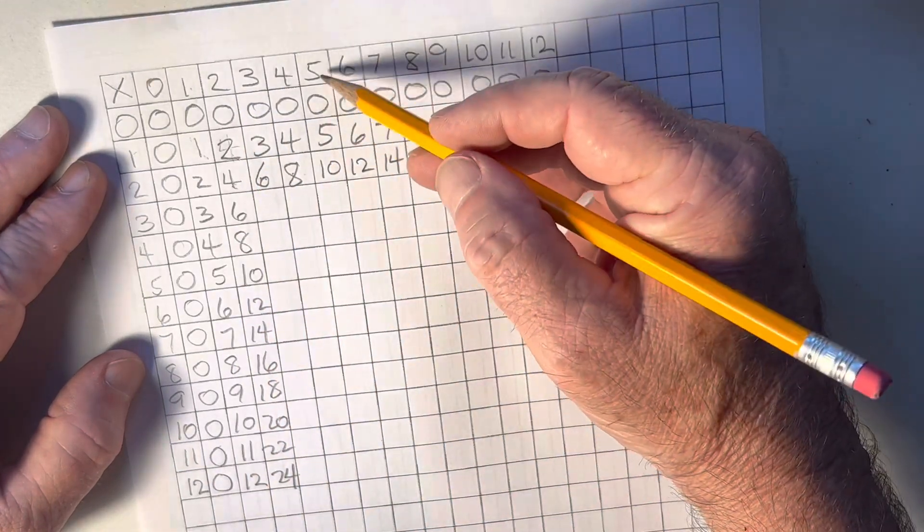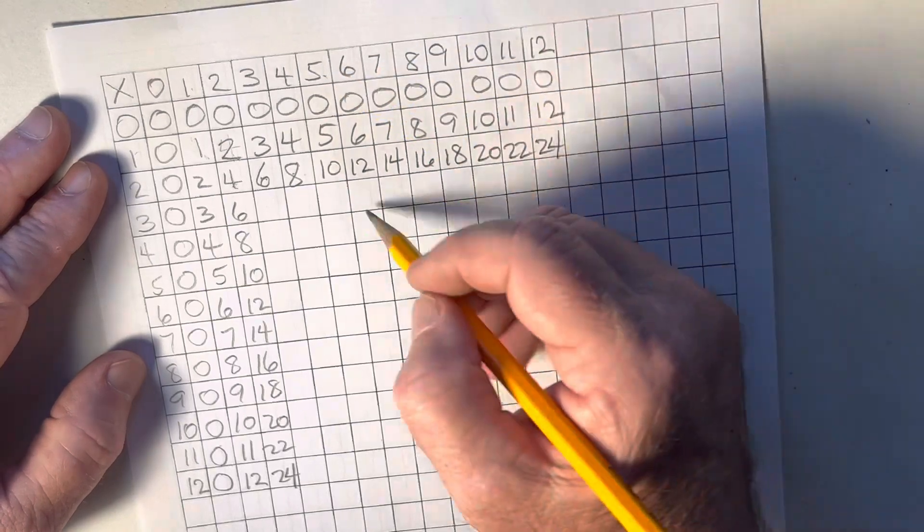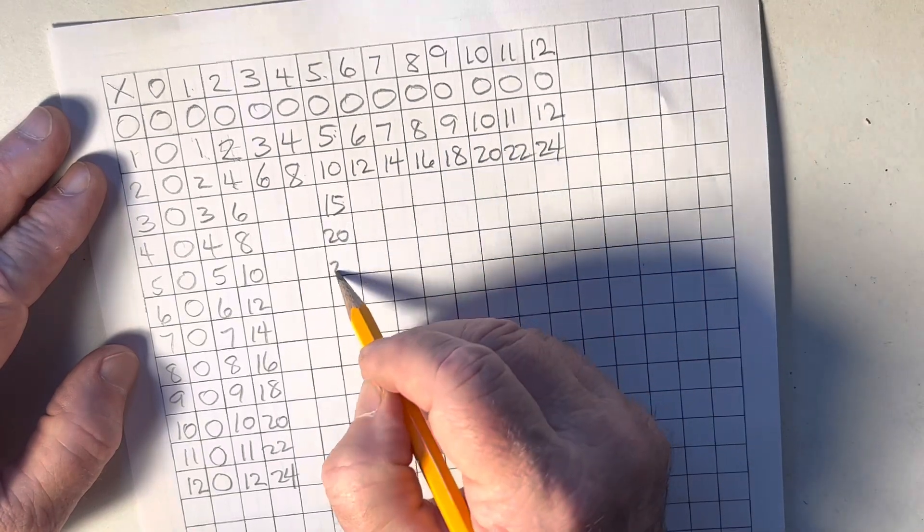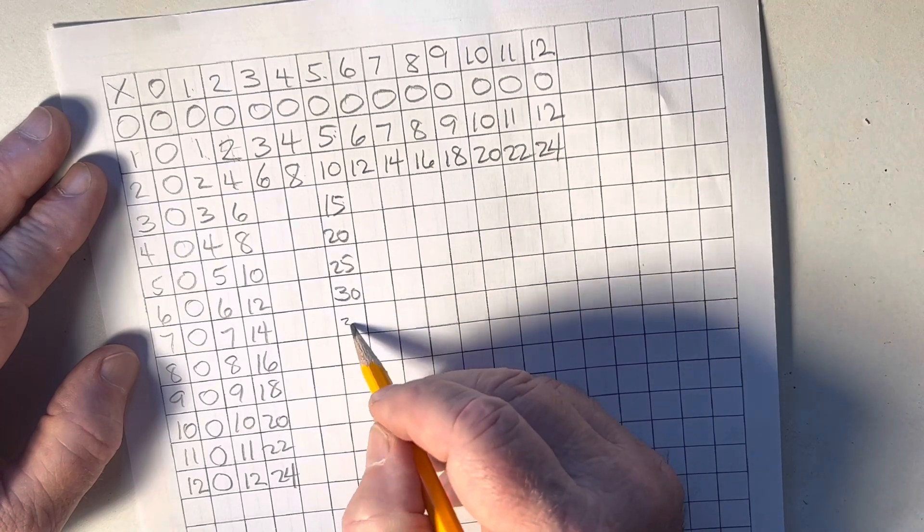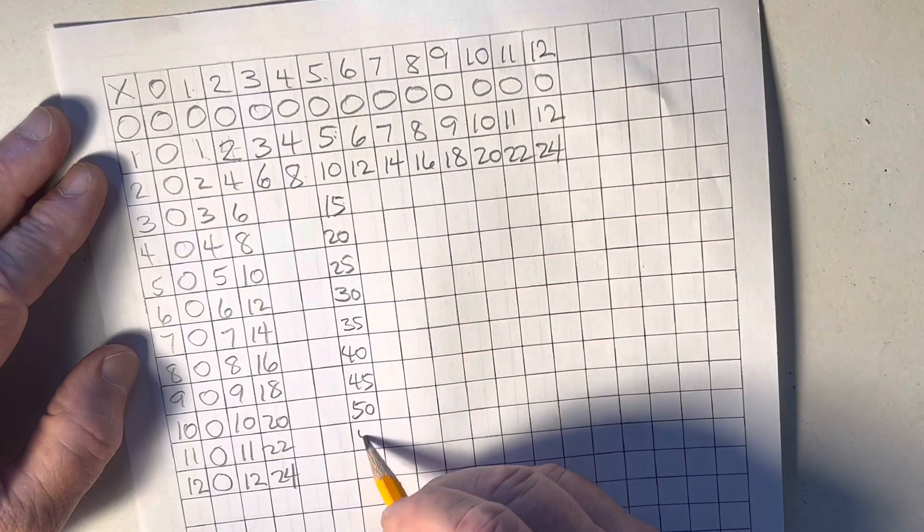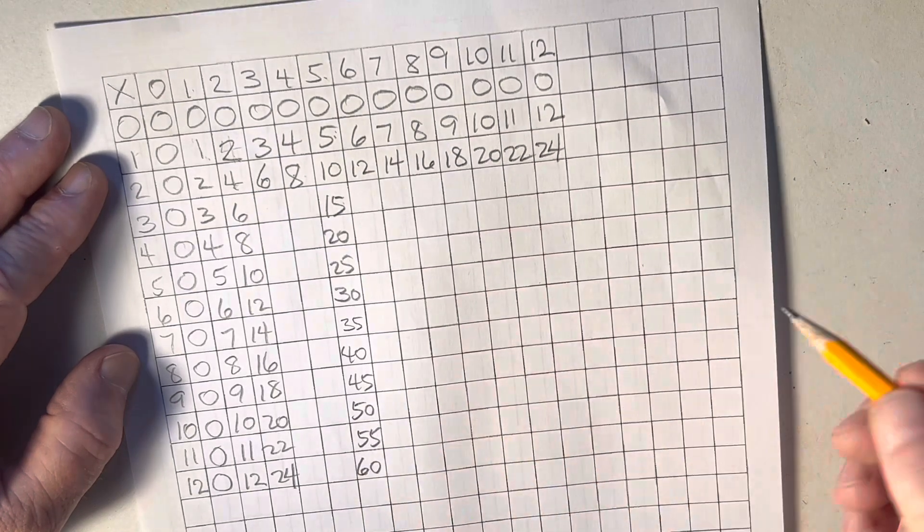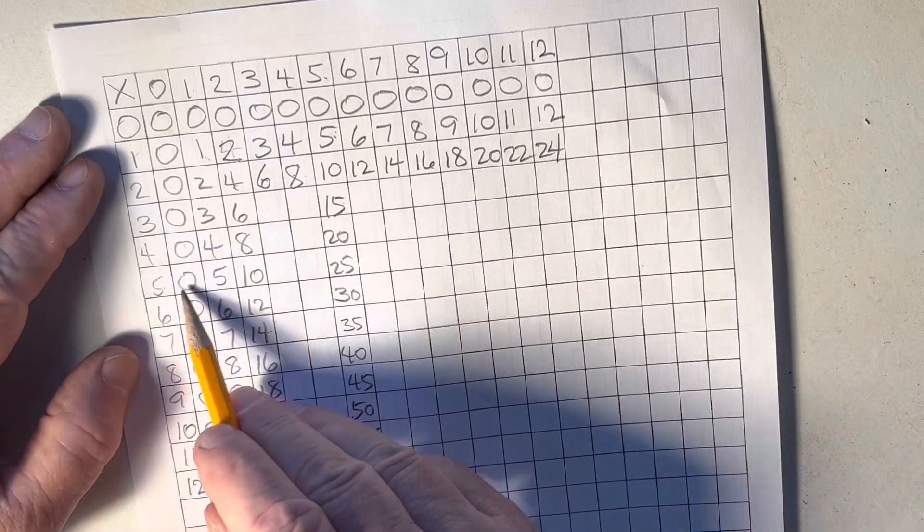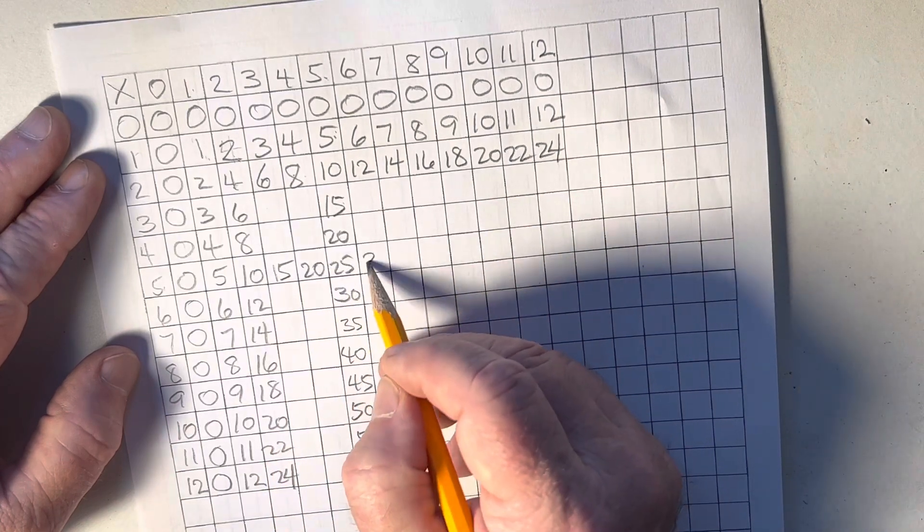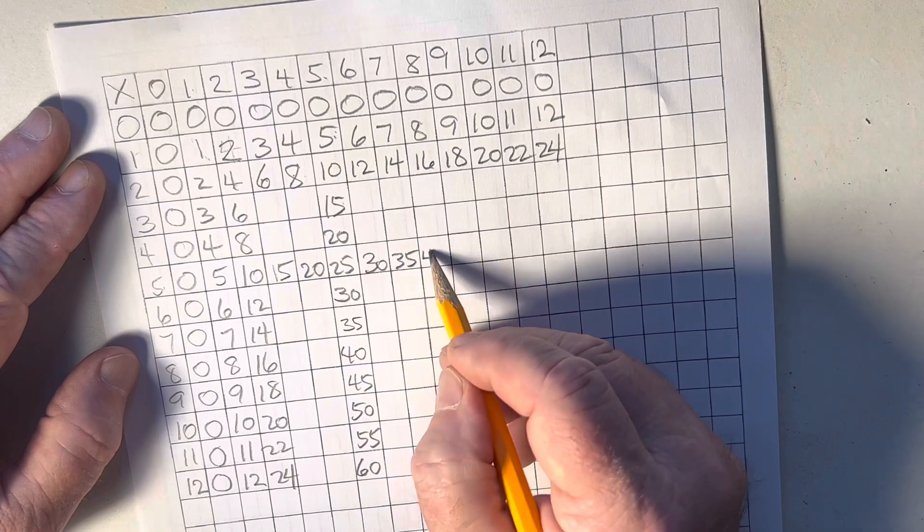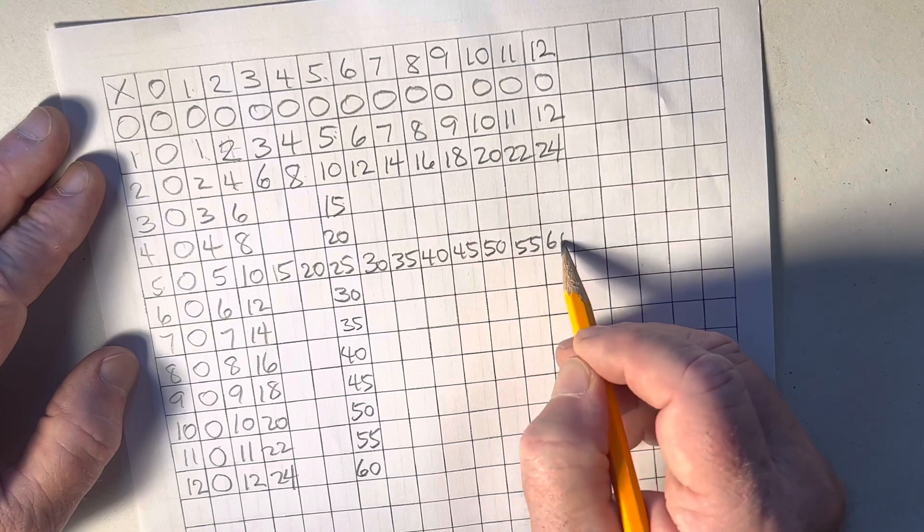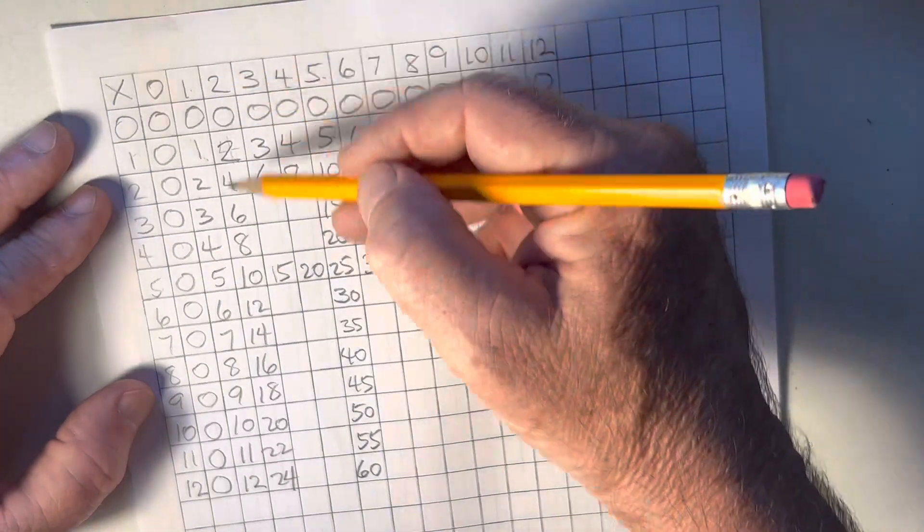Now, another row of numbers that the students already know are the fives. We can count by fives. Here's 5, 10. The next one's 15. And so on. 5, 10, 15, 20, 25, 30, 35, 40, 45, 50, 55, and 60. Now, I'm going to go the same way, do the same thing with the fives going this way. 5, 10, 15, 20, 25, 30, 35, 40, 45, 50, 55, 60.